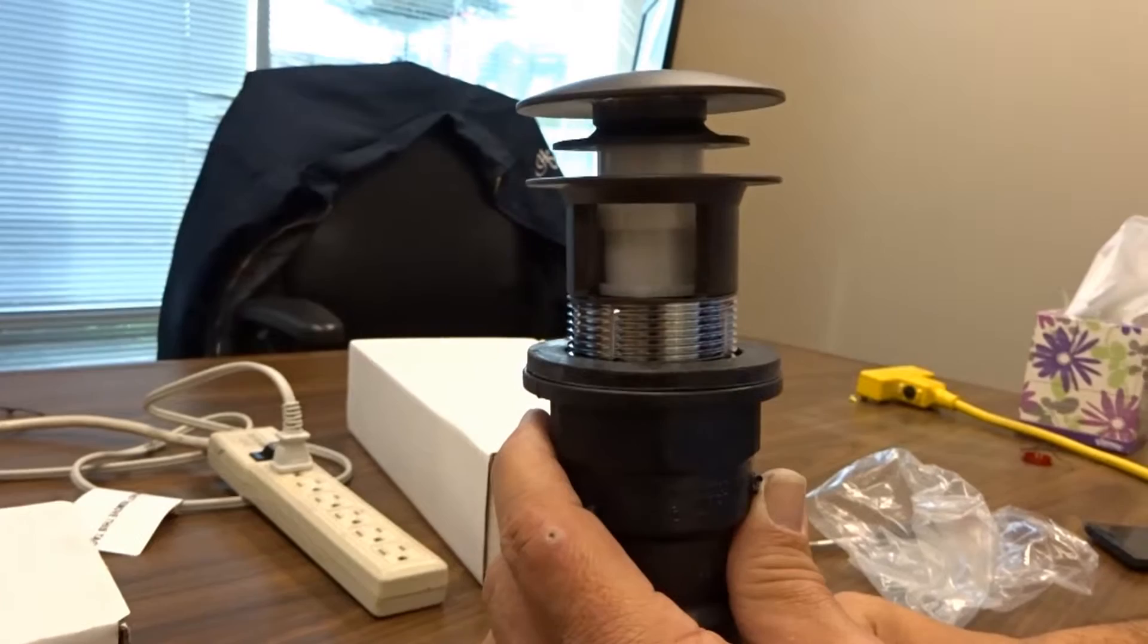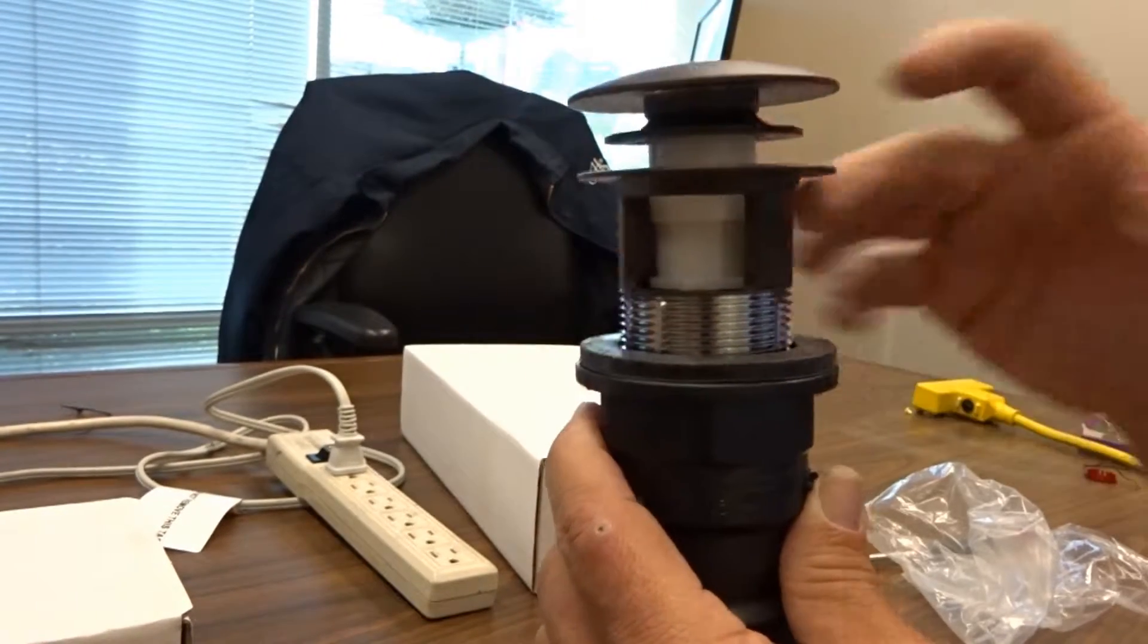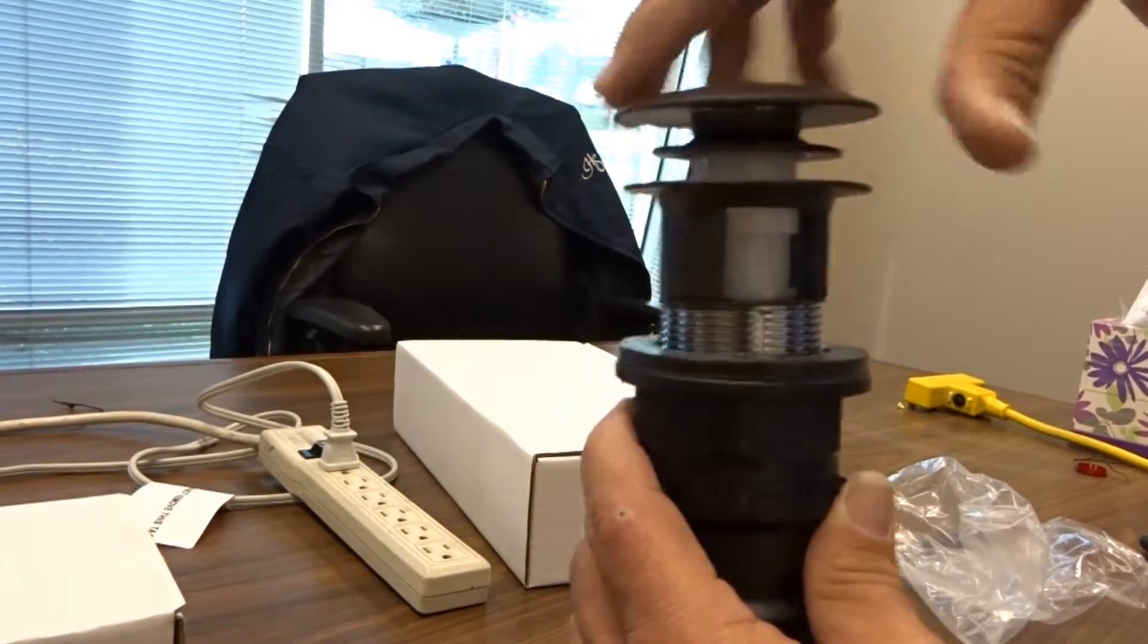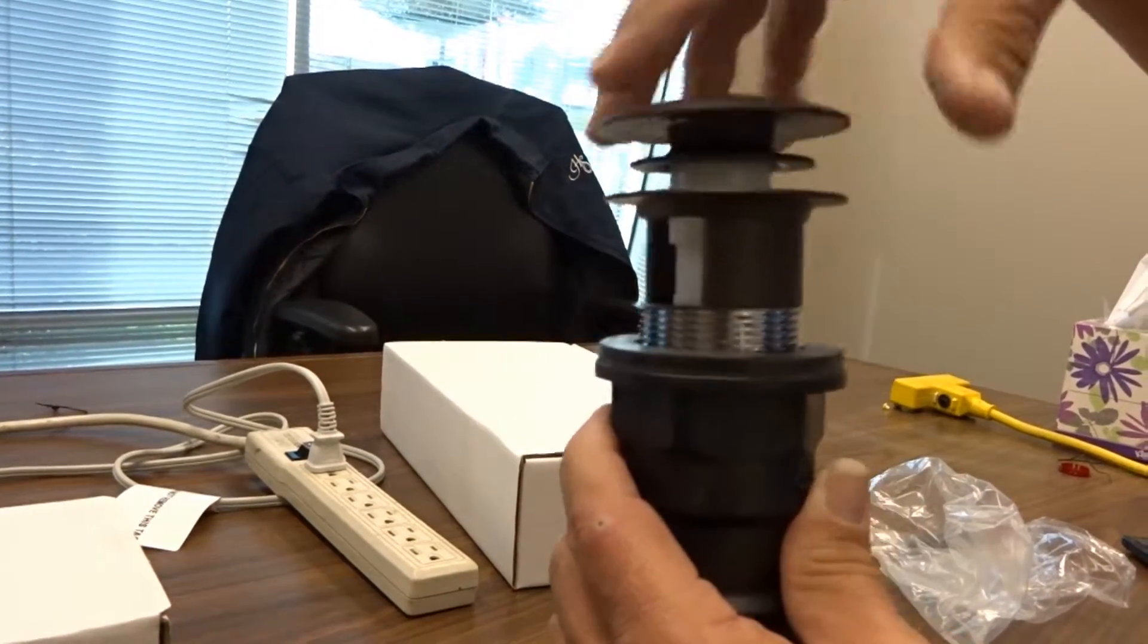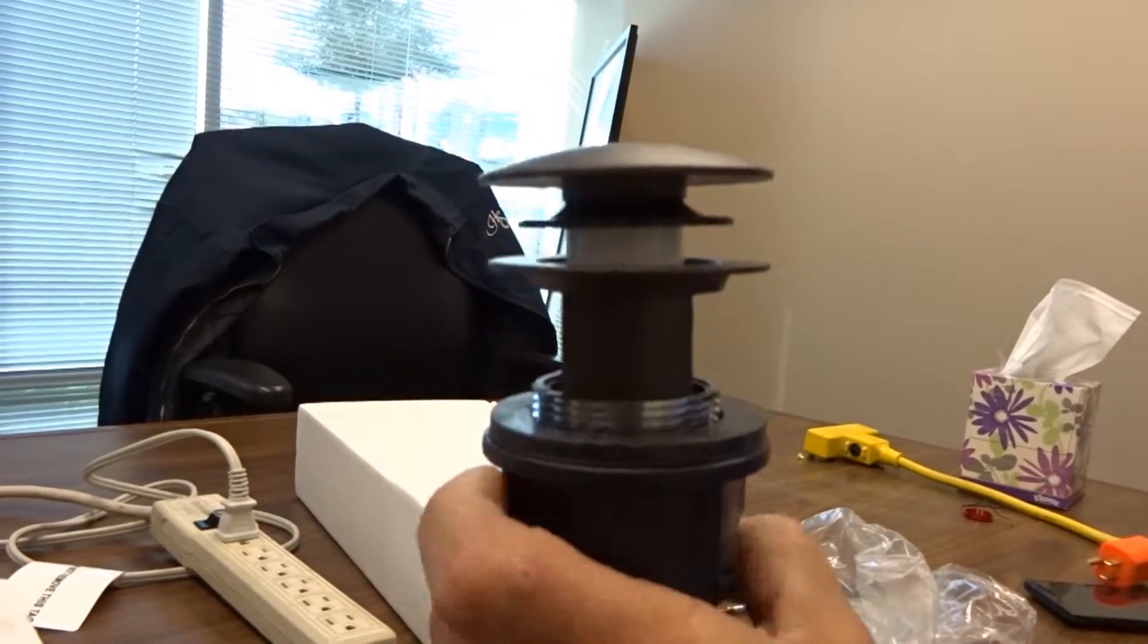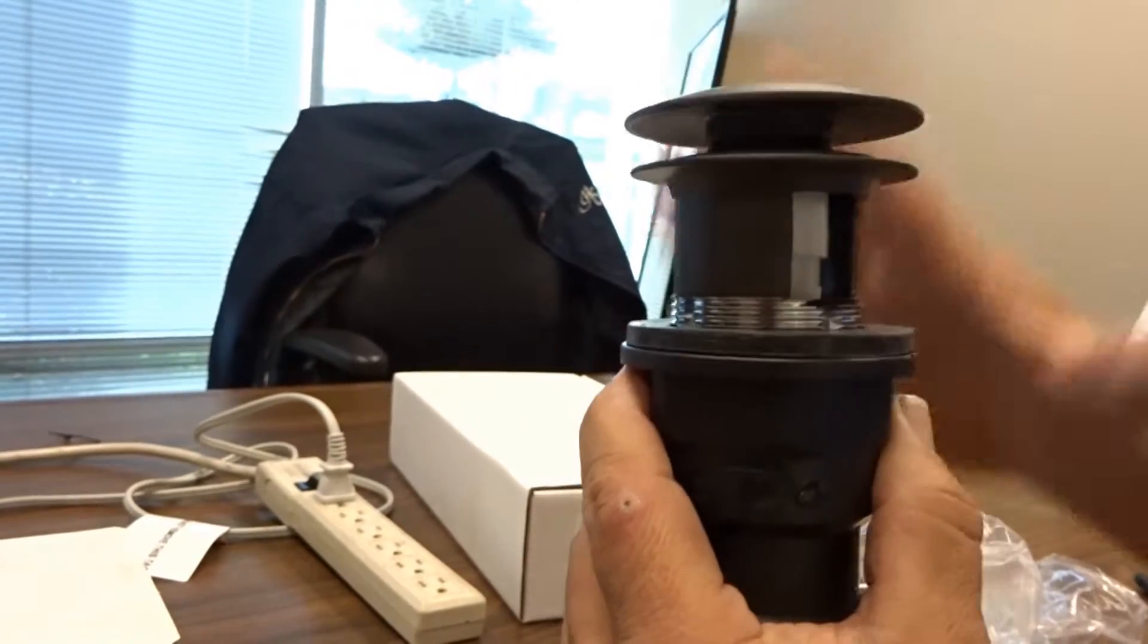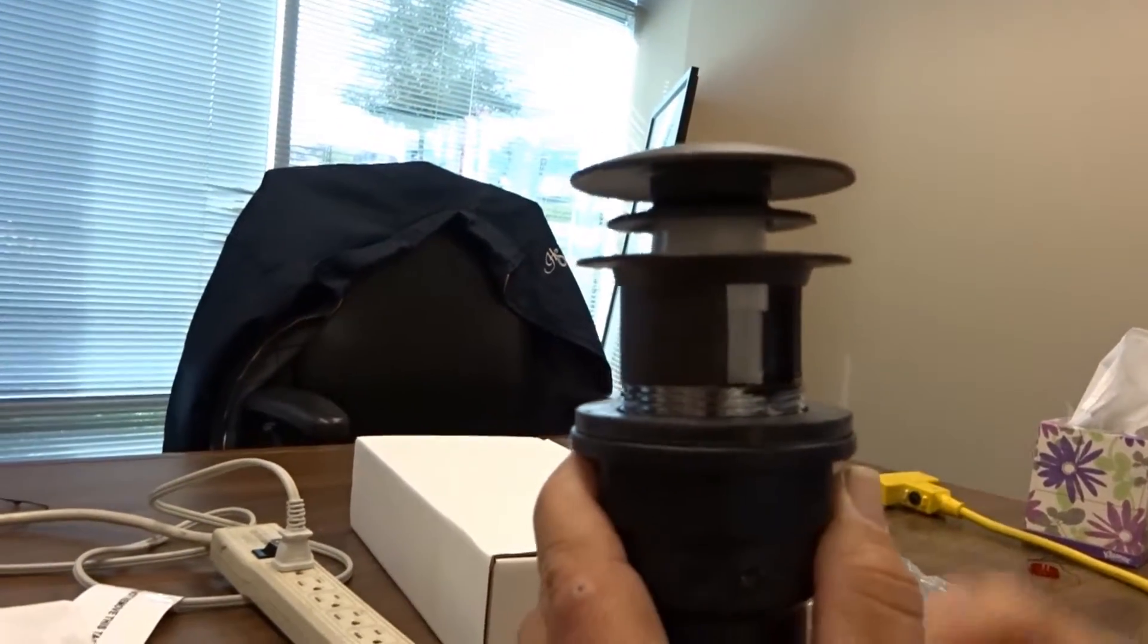Apply plumber's putty and secure it as tight as you can. That is your basic installation on a pop-up drain. Tap to close, tap to open. If you do not hear the click on your drain...